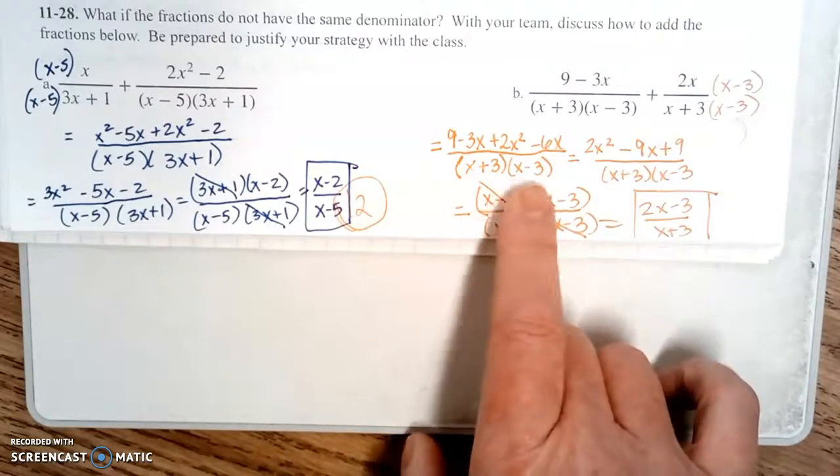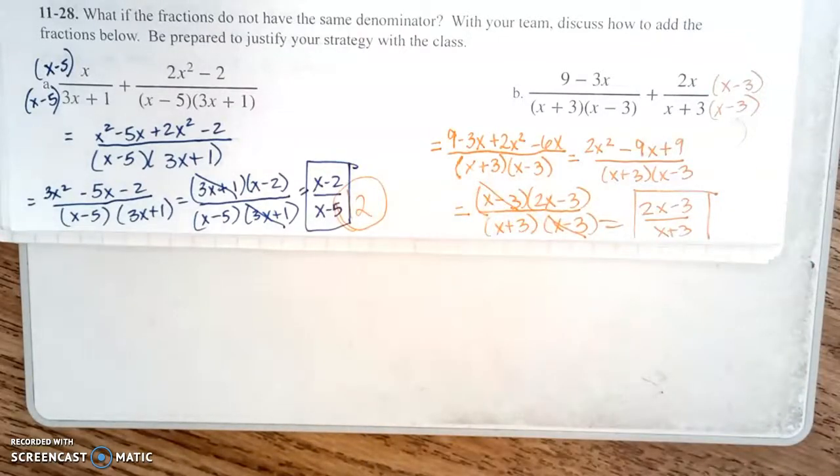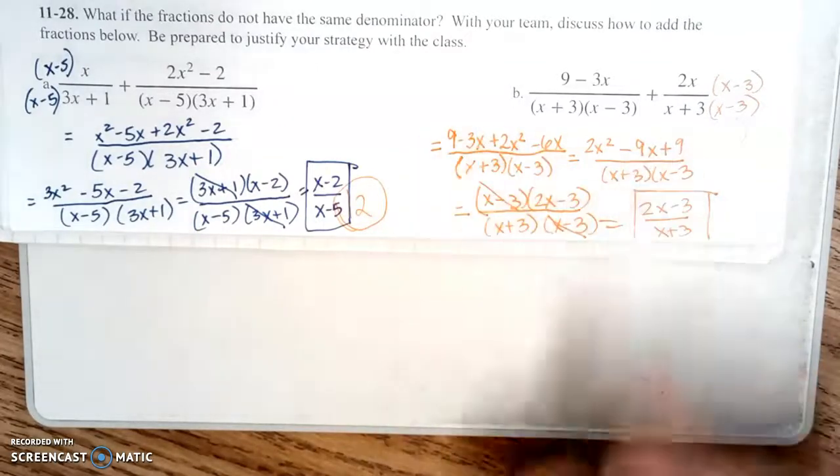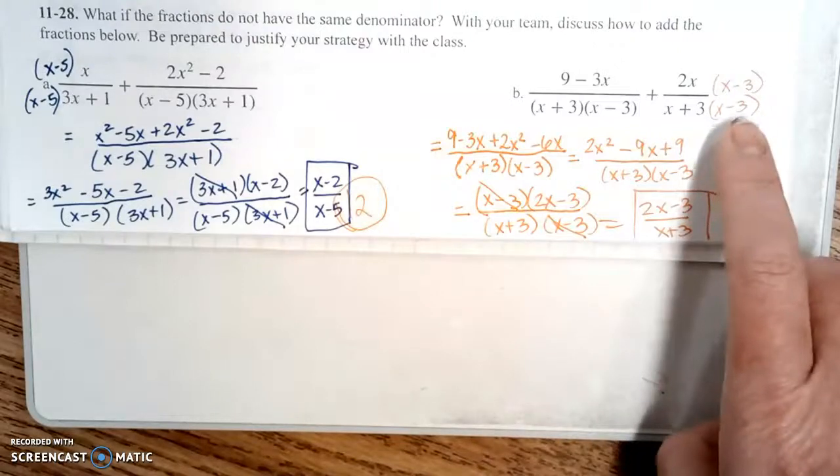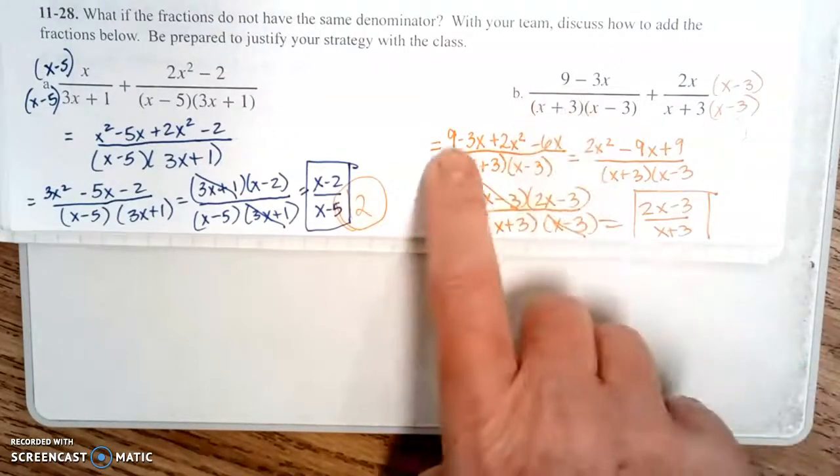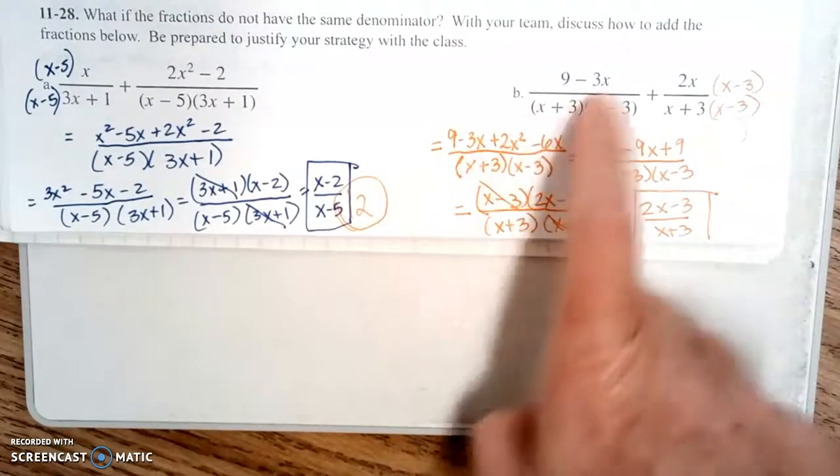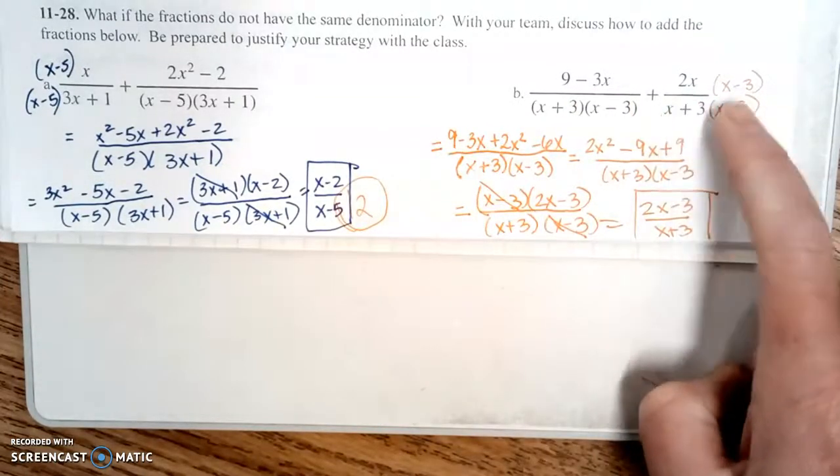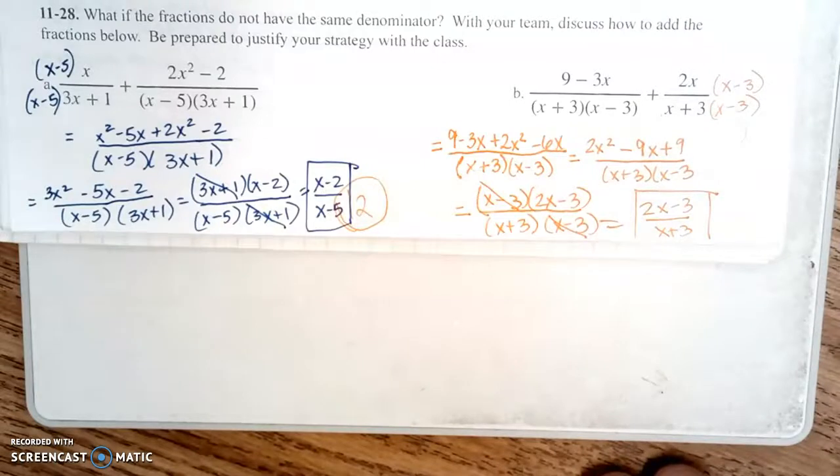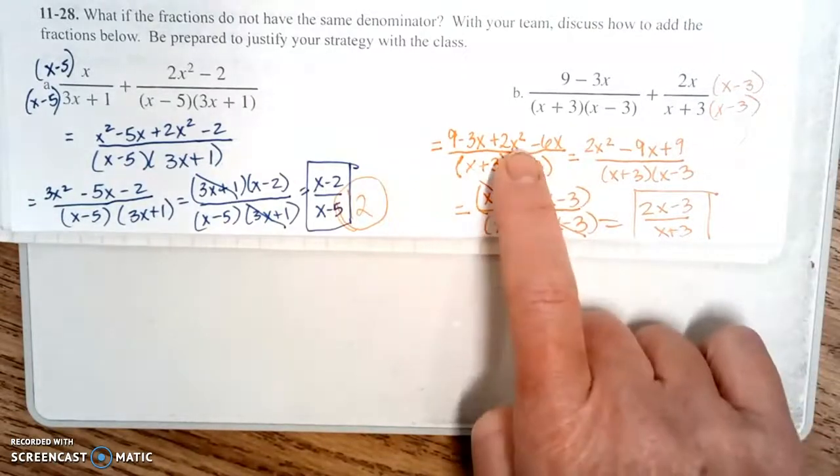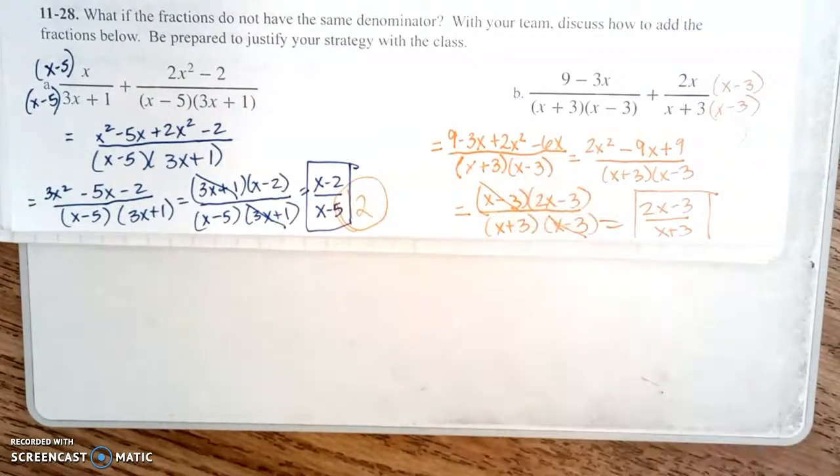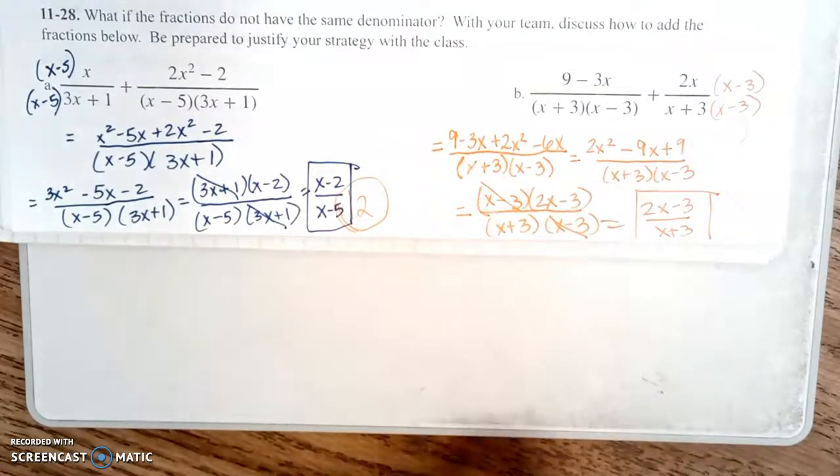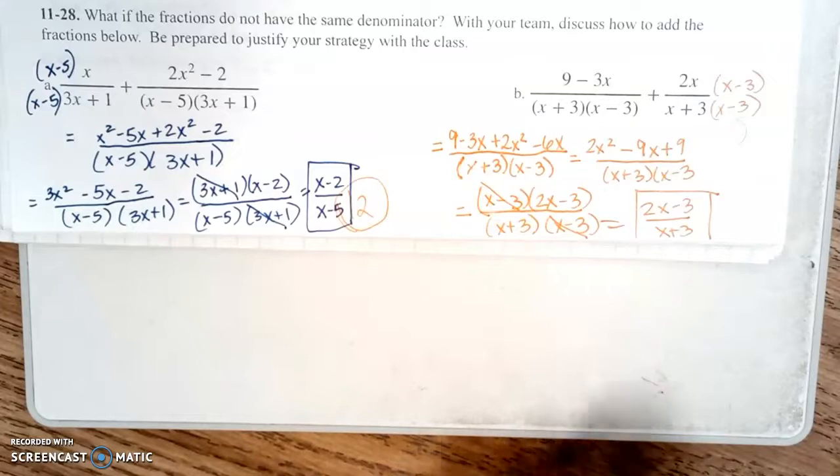Then we've got that common denominator. I didn't have as much space, so I kind of cheated my lines there a little bit. So I'm gonna write the 9 minus 3x, which was the numerator from the first expression. Then I'm going to distribute that 2x to the x minus 3, so 2x squared minus 6x.